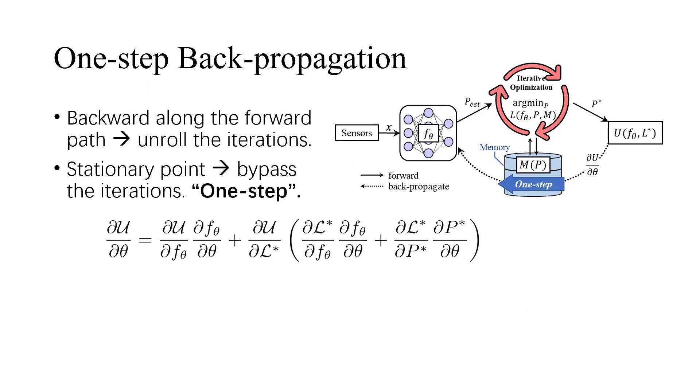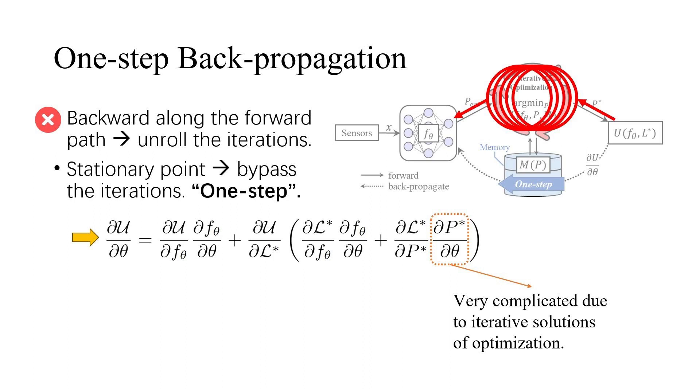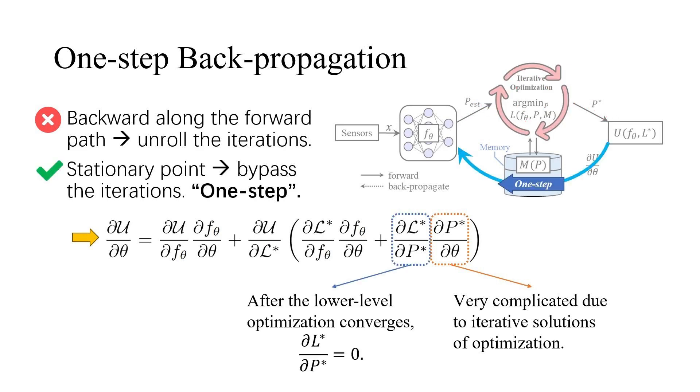Now I introduce how to back-propagate the upper-level objective U into the front-end. According to the chain rule, the gradient can be computed as follows. The challenge lies in the last term, which is very complicated due to iterative solutions of optimization. If we directly go backward along the forward paths, we need to unroll the iterations, which is inefficient and also error-prone due to numerical instabilities. Thus, we apply an efficient one-step strategy that utilizes the nature of stationary points to solve this problem. We find that after the lower-level optimization converges, this term becomes zero, which eliminates the complex gradient term and bypasses the lower-level optimization iterations. This technique allows the back-propagation to be done in one step.